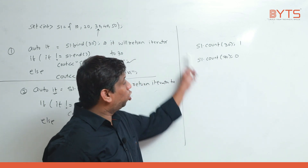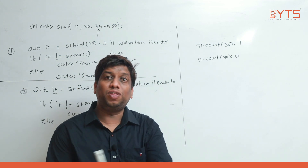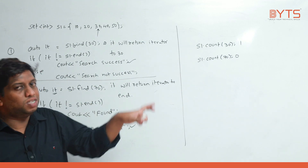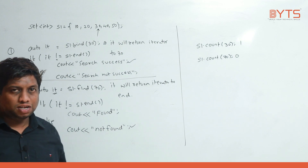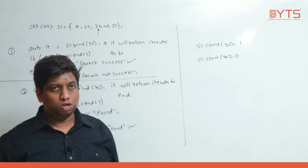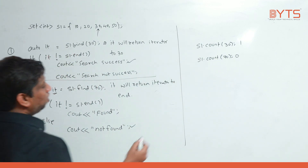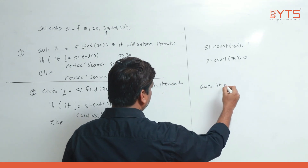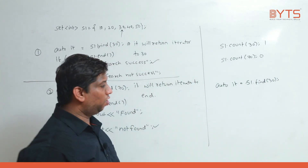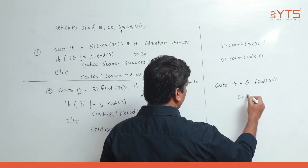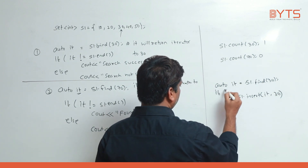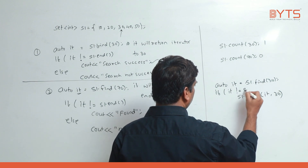But once you find the element and you need to do some job from that position, you cannot use count — you need find. For example, if 30 is there I need to insert 31 after it. I can write: auto it = s1.find(30), then s1.insert(it, 31) if it != s1.end().